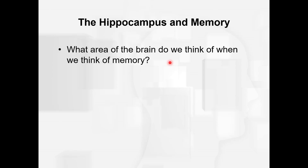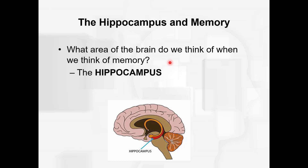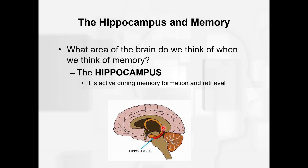What area of the brain do we think of when we think of memory? Thinking back to the anatomy chapter, hopefully you had the hippocampus pop into your mind. Here we find it in the brain — it's one of those subcortical areas that's deep in the brain, found in the temporal lobe area. It's active during memory formation and memory retrieval.